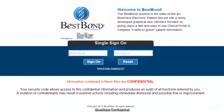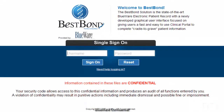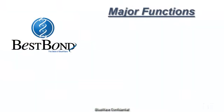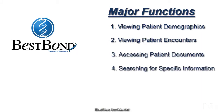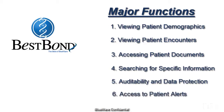BestBond is an online portal made to help you find pertinent records in a fast and easy manner. Major functions include viewing patient demographics information, viewing patient encounters, accessing patient documents, searching for specific patient information, auditability and data protection, and finally, patient alerts.